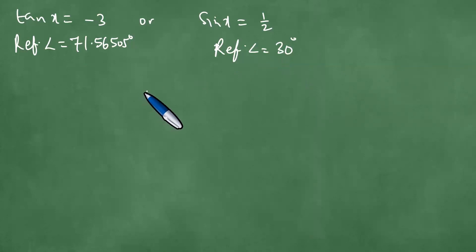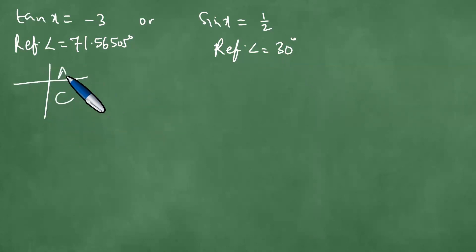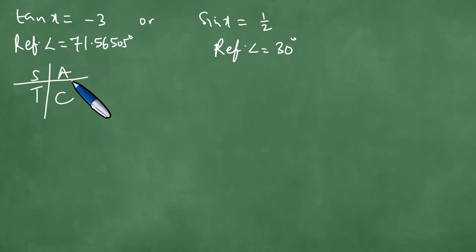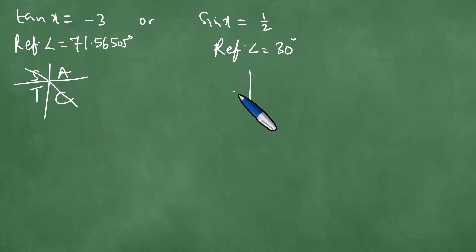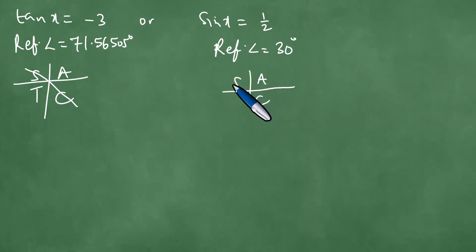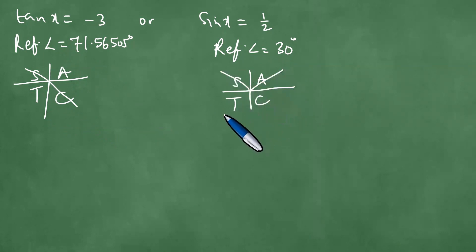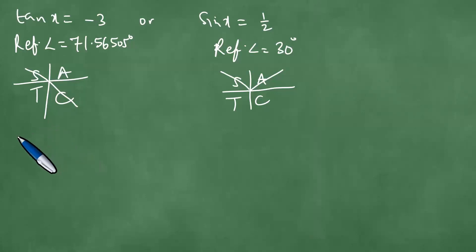In view of the CAST diagram, we know that the tangent is negative in the second quadrant and also negative in the fourth quadrant. We also know that according to the CAST diagram, the sine is positive in the first and second quadrants. So we shall get solutions accordingly.